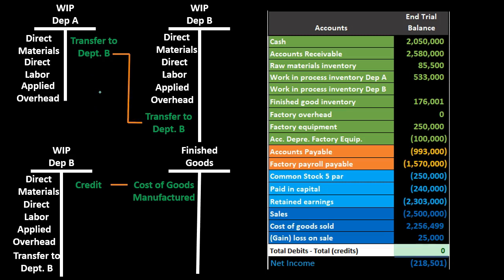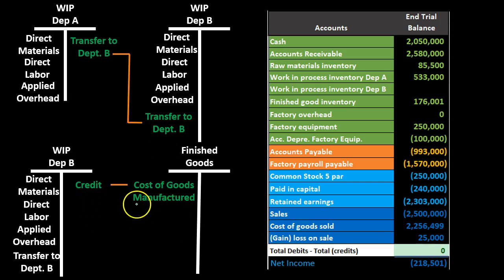In our example, we're discussing making candy. In that case, we would take it out of department A once the candy is done and put it into department B, where department B applies the wrappers or something like that. Then we take it out of department B once the wrapper has been applied and put it into finished goods, giving us the completed product transferred from department B to finished goods.